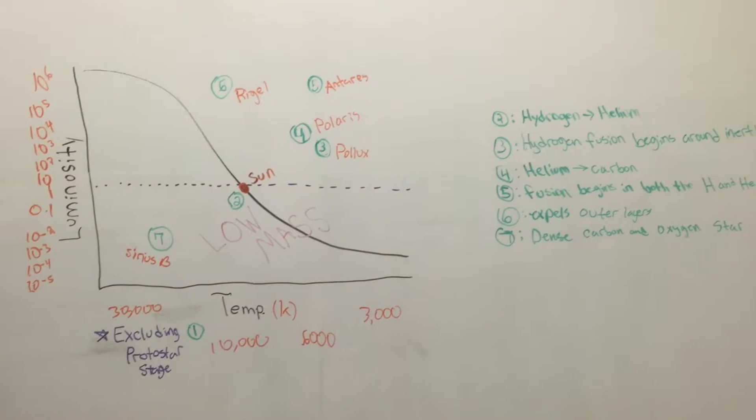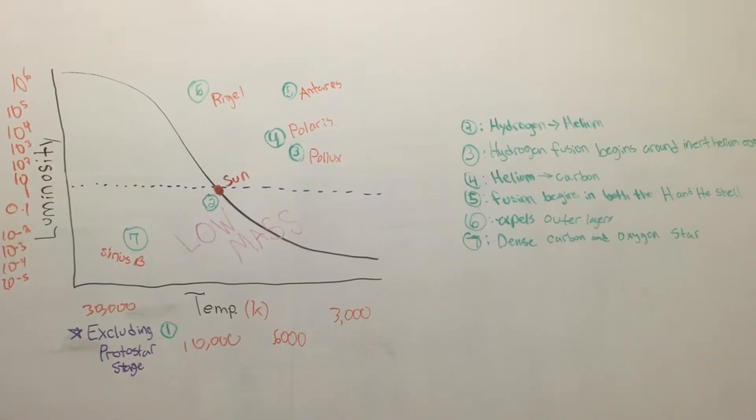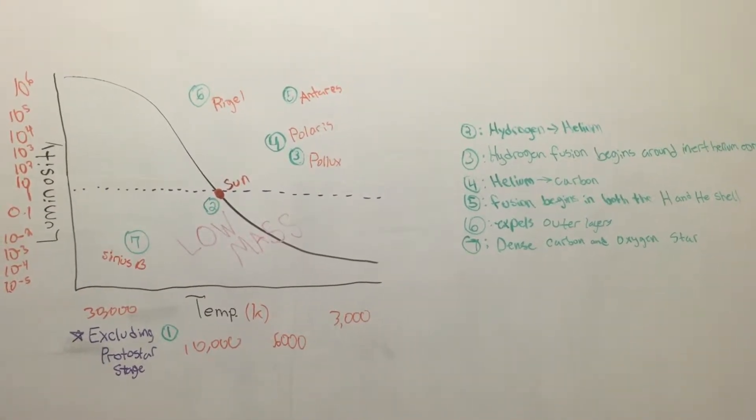Starting off in a main sequence such as our sun, the star is converting hydrogen into helium. Once that hydrogen is all used up, a red giant star is formed.